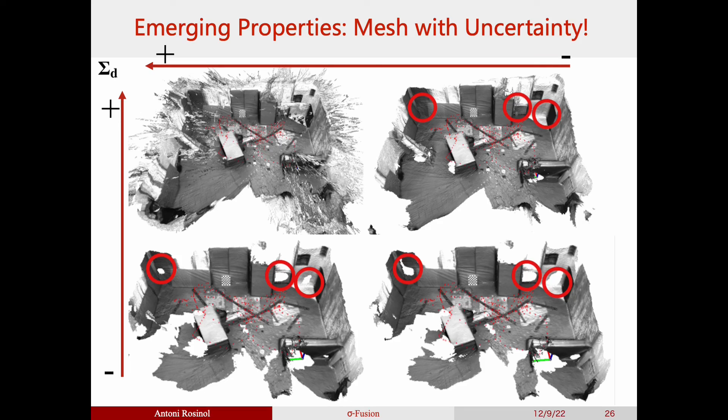By decreasing this maximum allowed uncertainty, we can notice that the first geometry to disappear corresponds to outliers and noise, as seen in the top row, followed by textureless regions and aliased geometry, as seen in the bottom row.